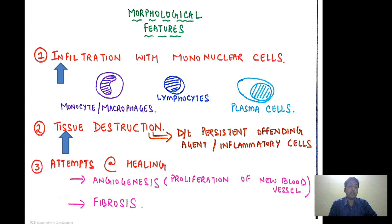Also it will be accompanied by tissue destruction. Tissue destruction occurs because of persistence of the offending agent and also the inflammatory cells. Thirdly, we will see attempts at healing — that means we are going to see angiogenesis, meaning formation of new blood vessels, and also fibrosis. Fibrosis is basically seen in long-standing chronic inflammatory diseases. So these are the three basic morphological features of chronic inflammation.